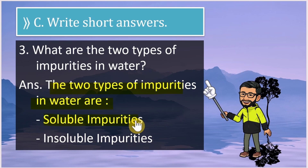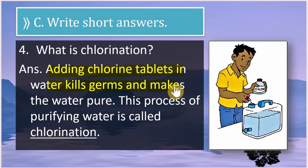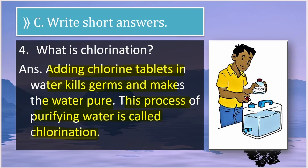Question 3: What are the two types of impurities in water? The two types are soluble impurities and insoluble impurities. Question 4: What is chlorination? Adding chlorine tablets to water kills germs and makes the water pure. This process of purifying water is called chlorination.